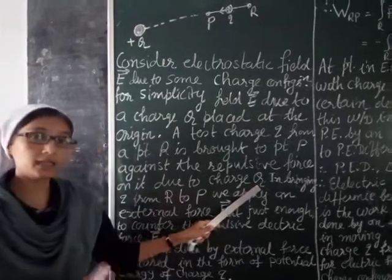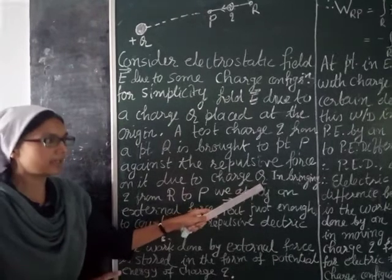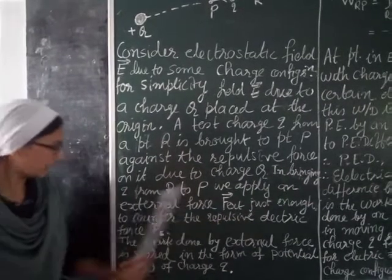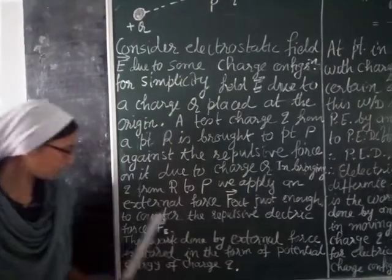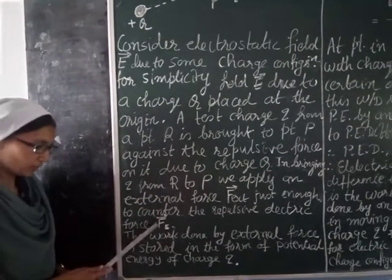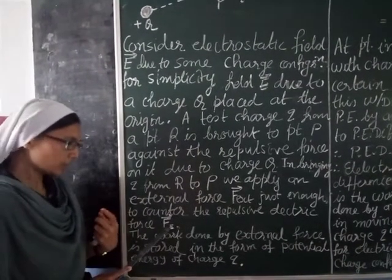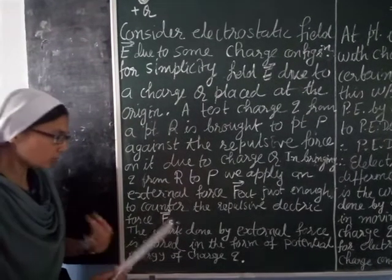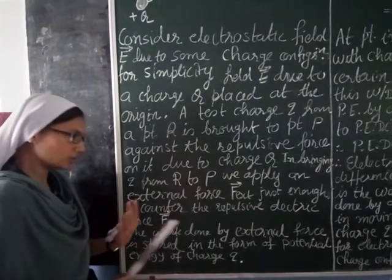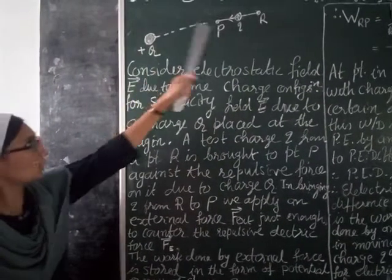Charge Q creates an electric field and you are going to bring this positive charge from R to P against this electric field. In bringing Q from R to P, we apply an external force F_external, just enough to counter the repulsive electric force F_E — the electric force because of the charge. We have to give a force equal and opposite to this so that we can bring the positive charge against the electric field of Q to the point P.